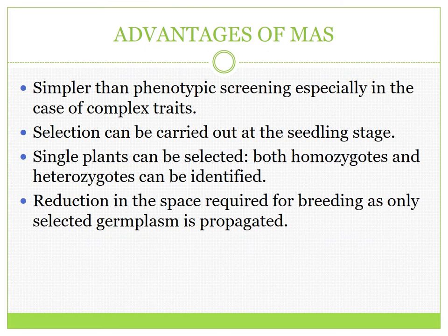There are several advantages of marker-assisted selection, or MAS. It is simpler than phenotypic screening, especially in the case of complex traits. Selection can be carried out at the seedling stage without waiting for the plant to develop into full maturity, which saves time. Single plants can be selected, and both homozygotes and heterozygotes can be identified. All of this results in a reduction in the space and time required for breeding.